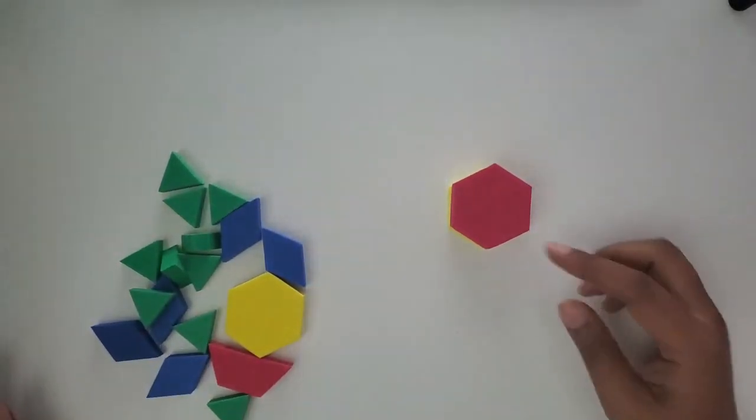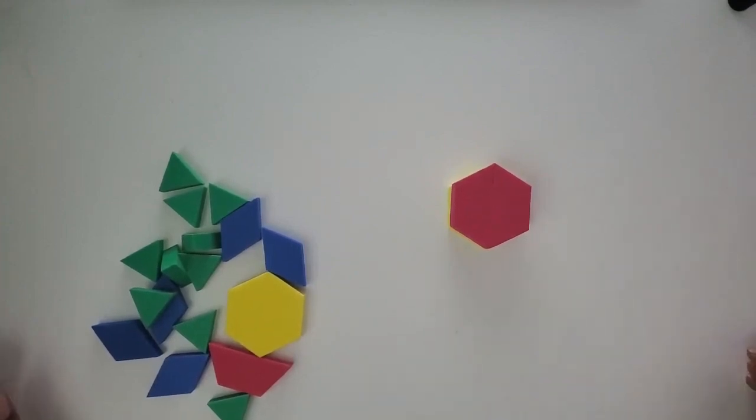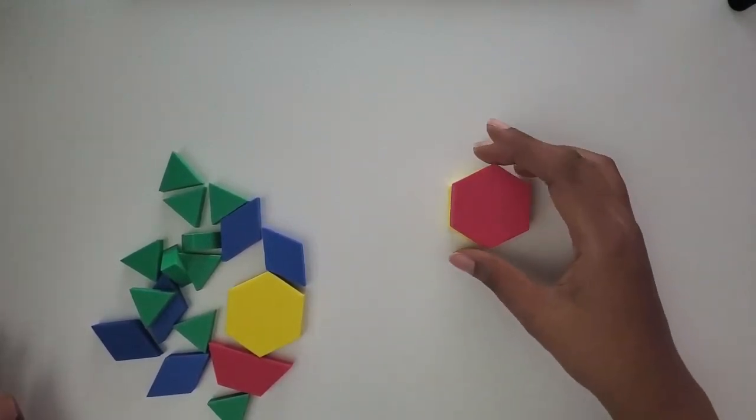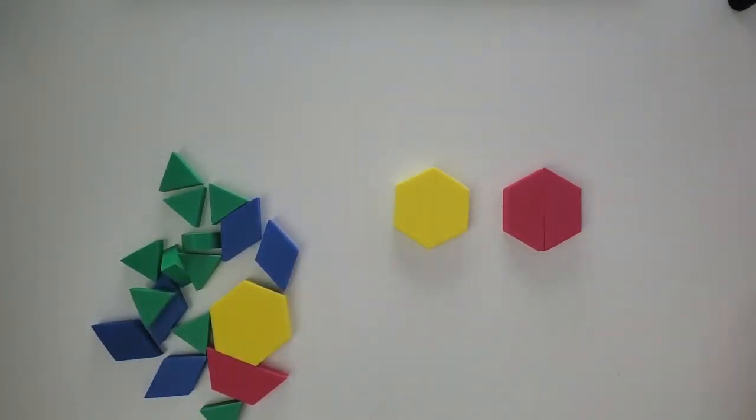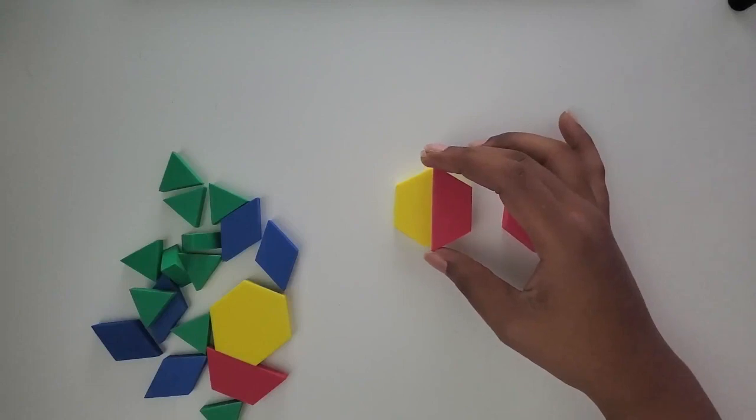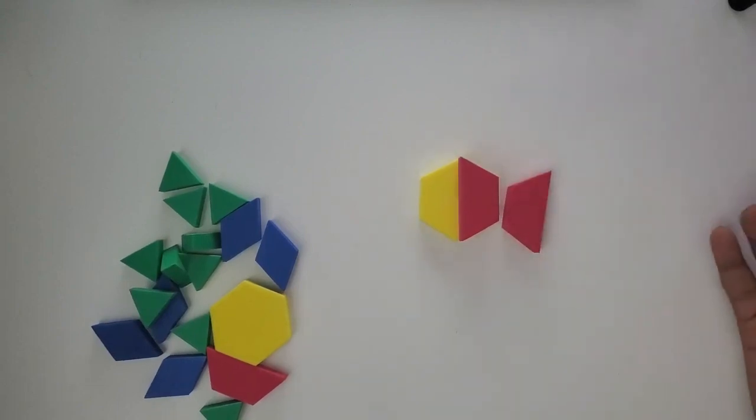Now I see that two of those trapezoids covers the whole hexagon. So two trapezoids can cover that one hexagon. So if I only use one trapezoid, how much does that cover of the hexagon? One half. Using this vocabulary with students helps to build up their understanding and their knowledge of fractions before we even get to using our fraction numbers or fraction symbols.